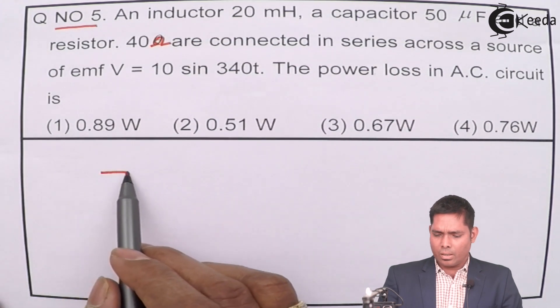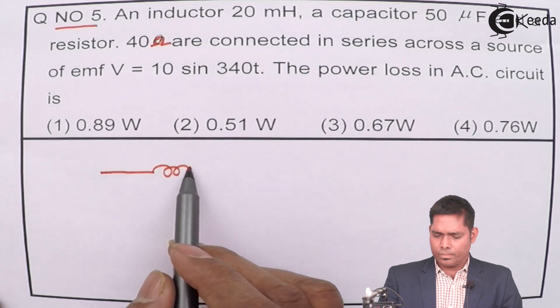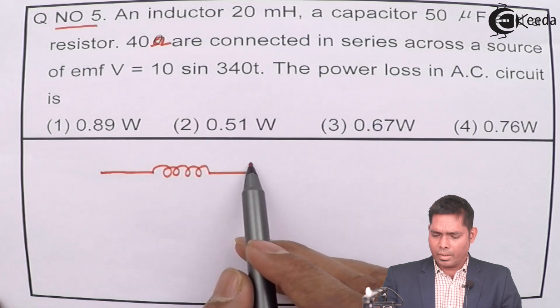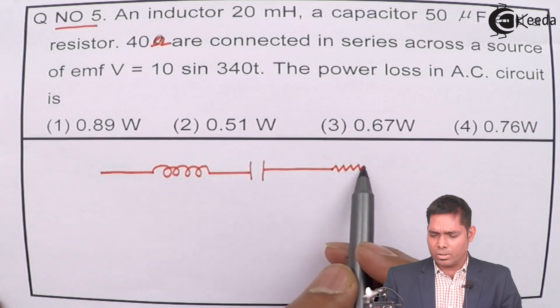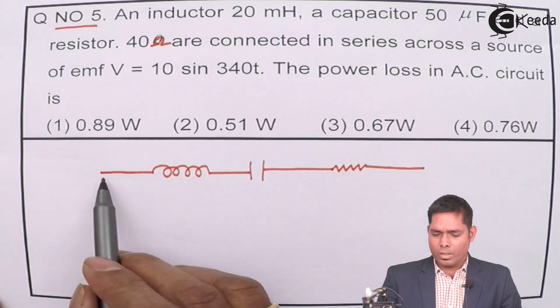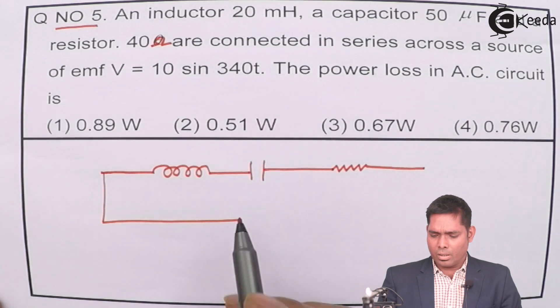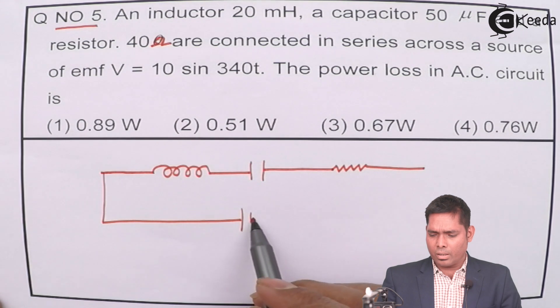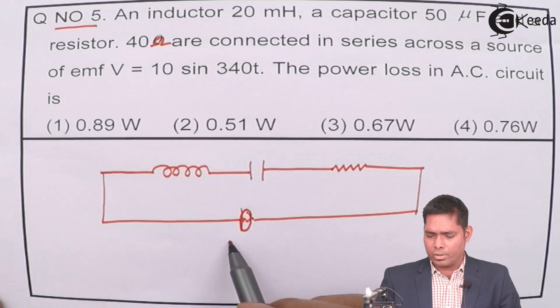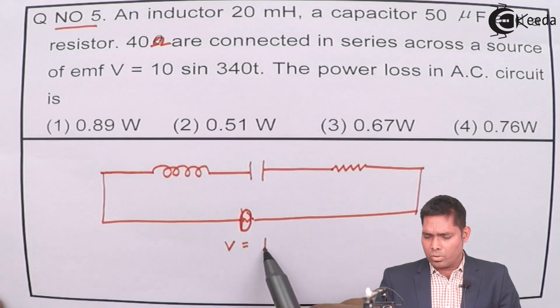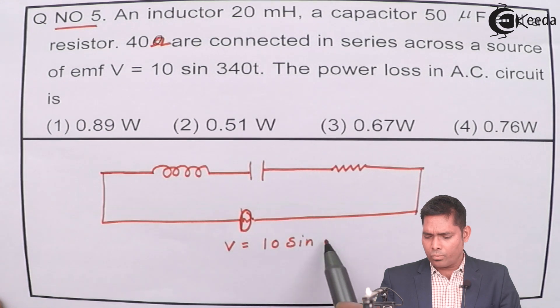So what is the situation? An inductor, which is a coil, a capacitor, a parallel plate capacitor and a resistor are in series. They are connected in series with an EMF and that is V equals 10 sin 340t.